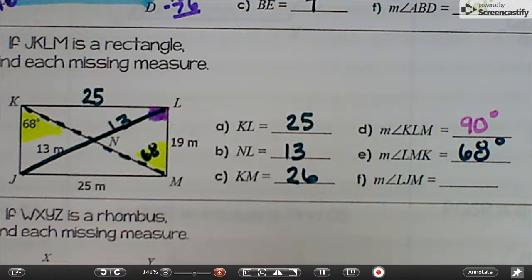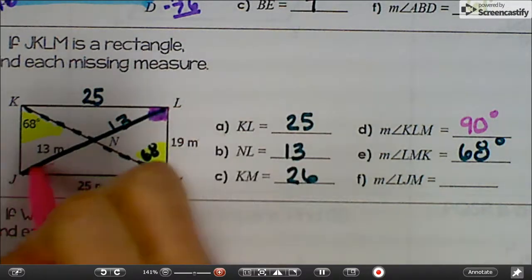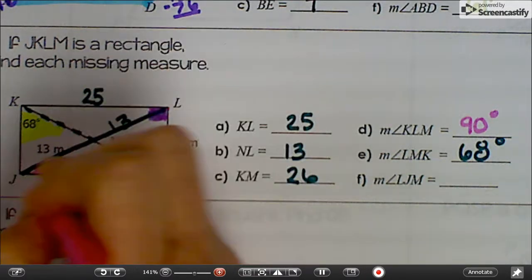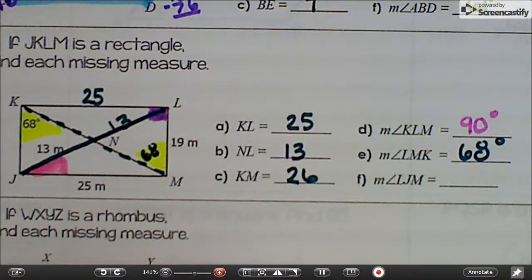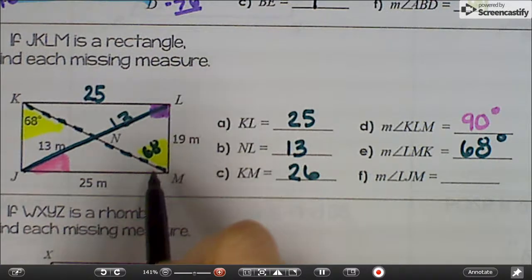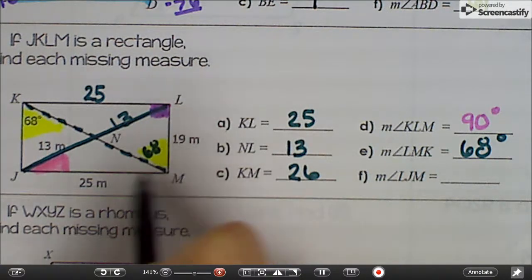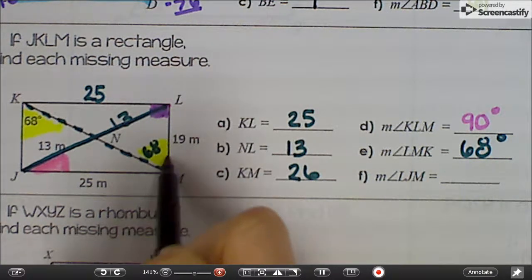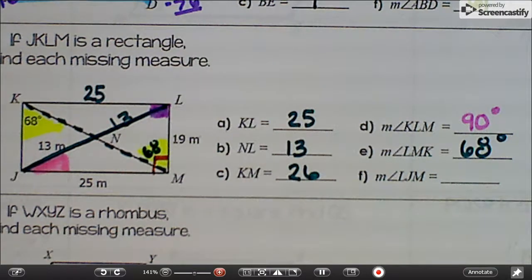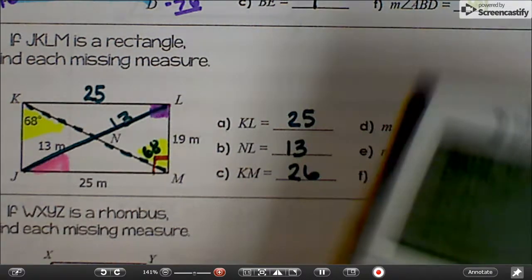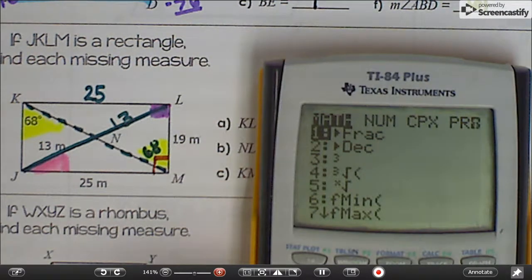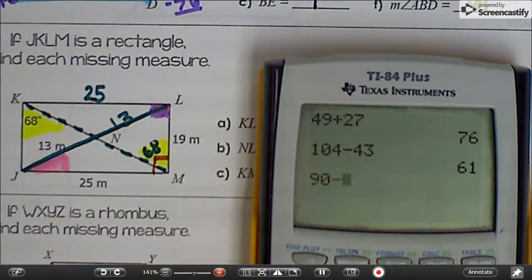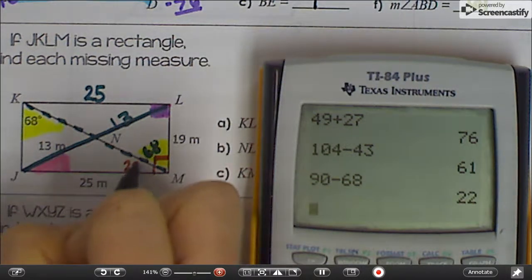And lastly, angle LJM. LJM is right here. All right. So watch this magic unfold. There's a couple ways to do it. For me, I would look at this right angle because in a rectangle the angles are all right angles on the corners. And I would just do 90 minus 68. That gives me 22 degrees for this angle right here.